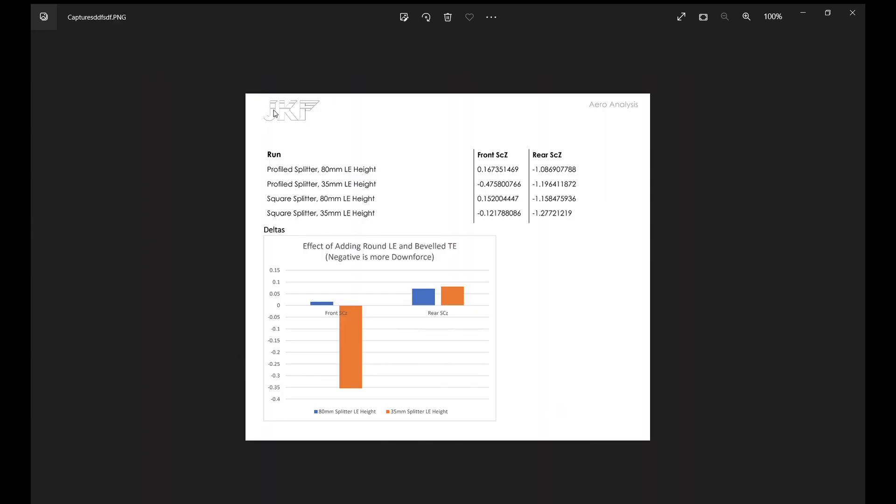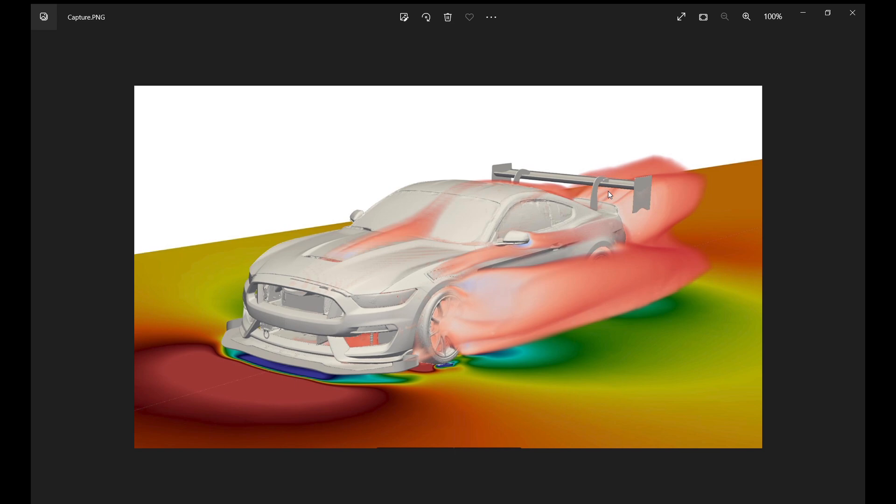All right so here's a screen grab of the total report that JKF Aero sent me. Our profiled splitter at 80 millimeter ride height, you can see our numbers here at 35 millimeters and 80 millimeters. Now a quick note, I think in all the CAD models I put 30 millimeters but correction they were 35 millimeters. Effectively this column right here is front downforce with rear downforce. Quick note, you can see how the car is extremely rear aero biased.